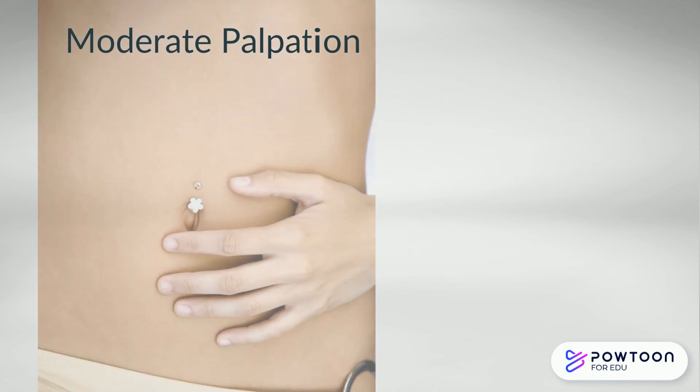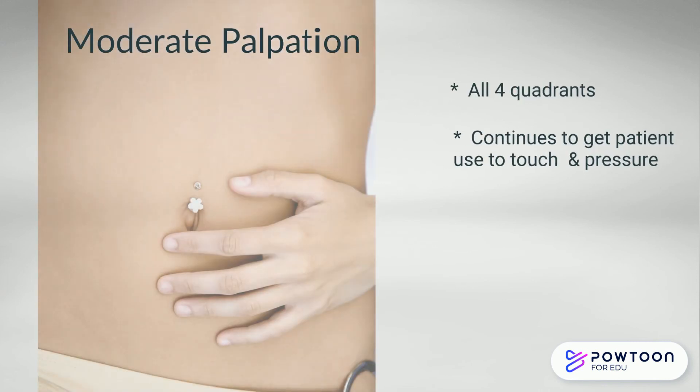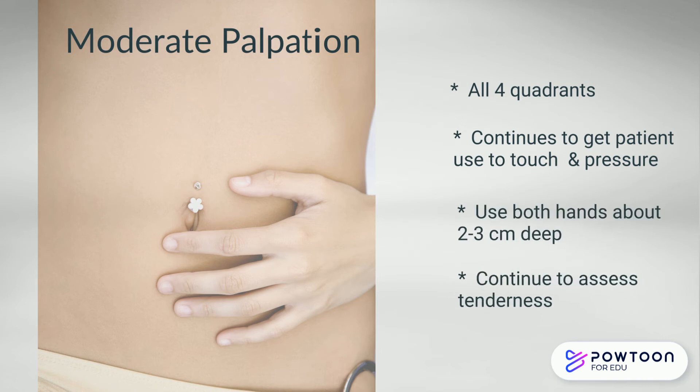After you've completed light palpation, you move on to moderate palpation. Again, you'll do this in all four quadrants, a little bit deeper — between two to three centimeters. Use both hands and continue to assess for tenderness.